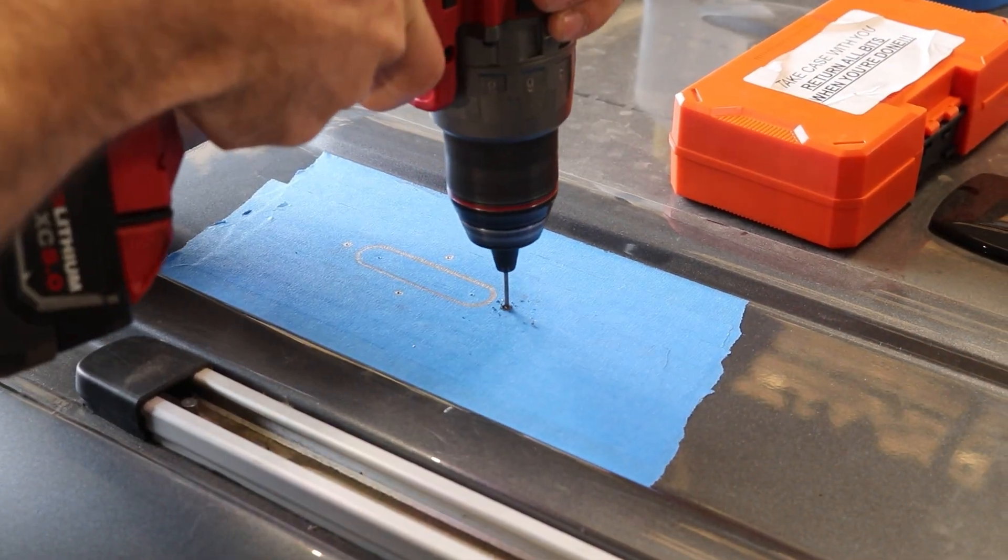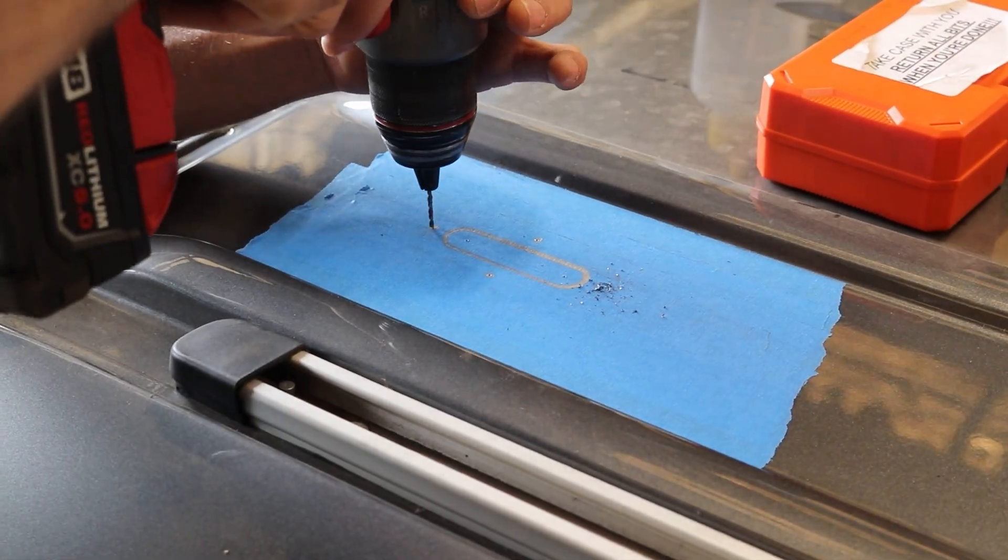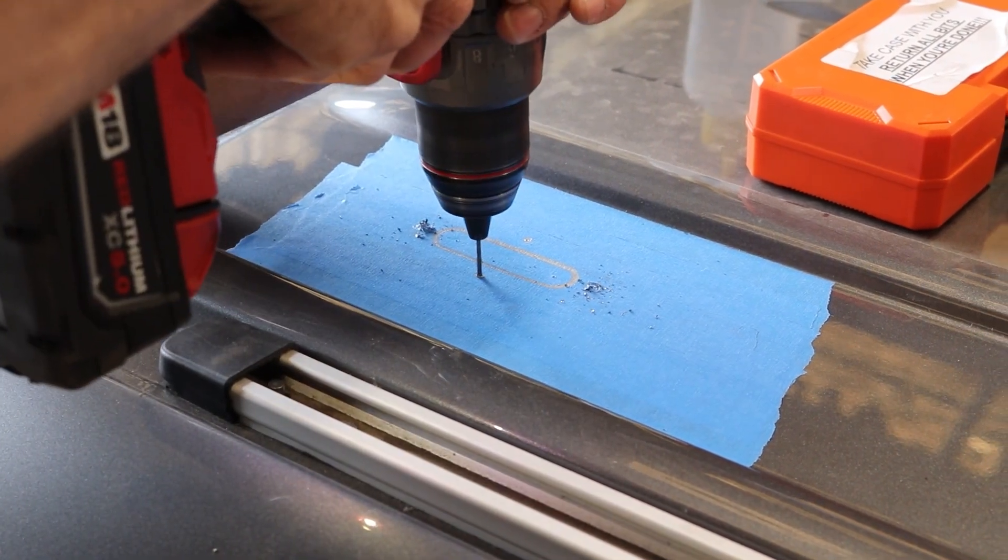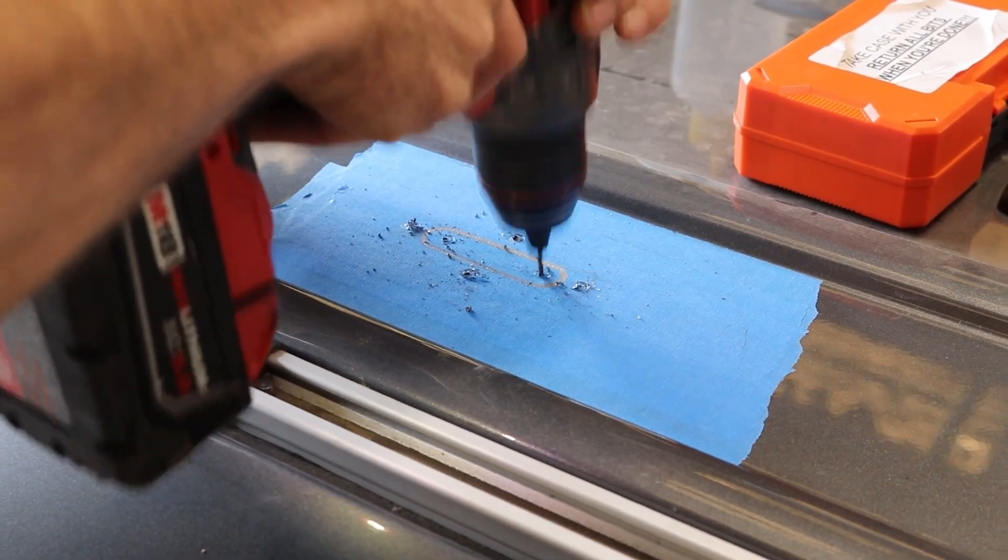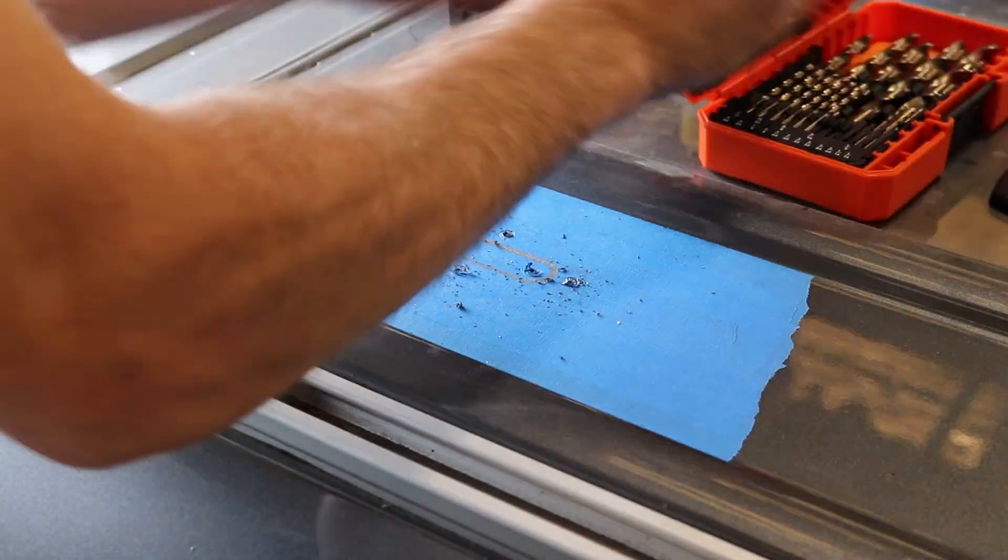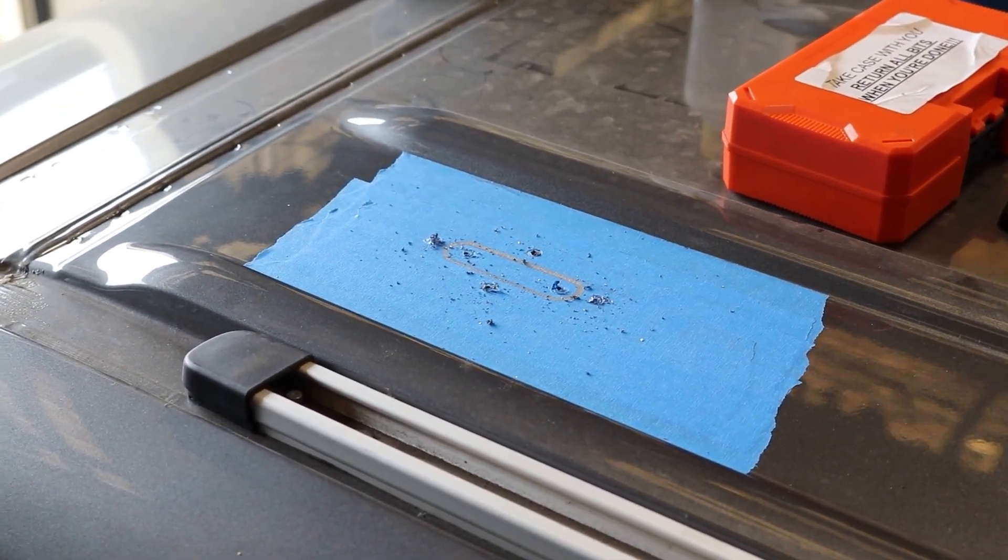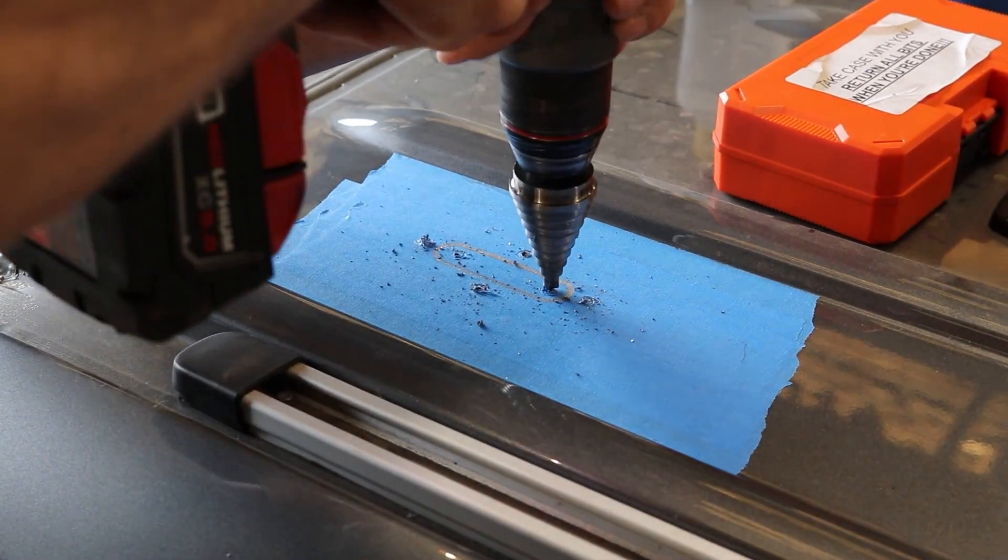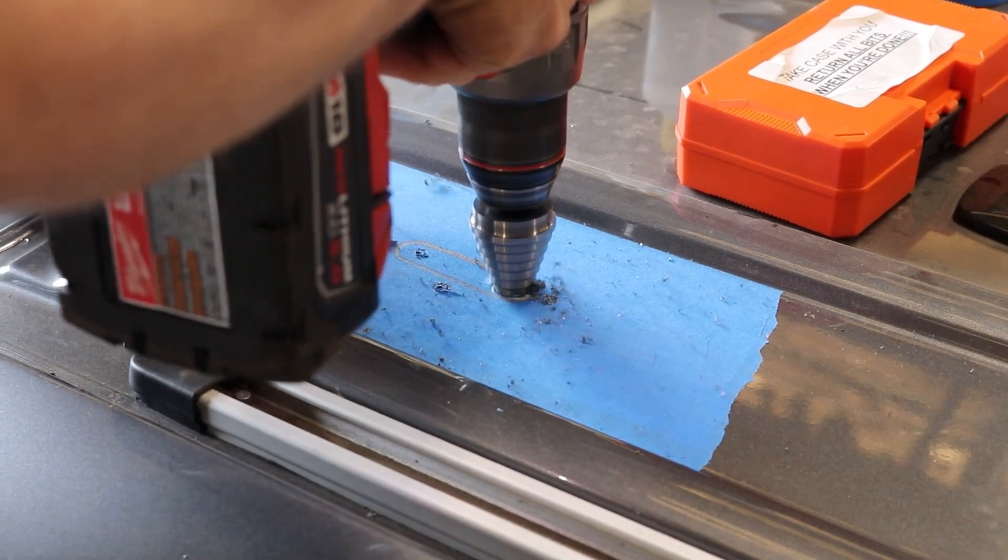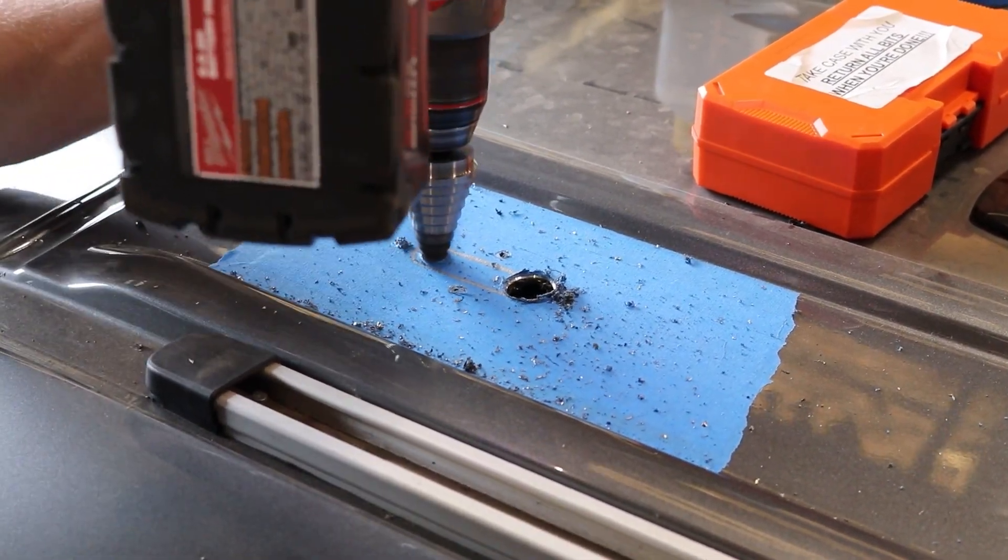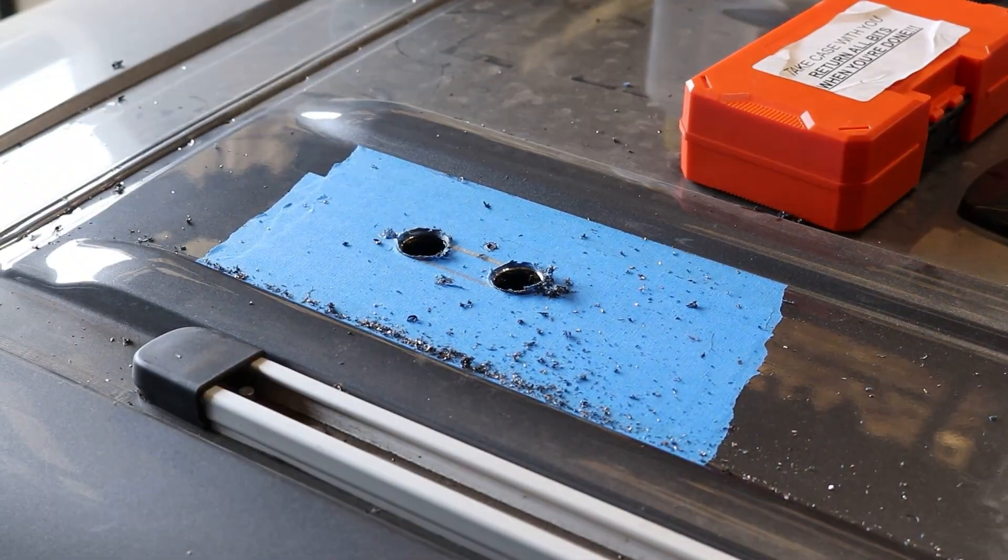We're using our 3/32nds bit to drill pilot holes for all the various screws used to mount the scan strut gland. Now we're coming in with the step bit or hole saw to drill out the ends of the actual gland hole. From there you just need to connect the straight lines to create your oval cut out.